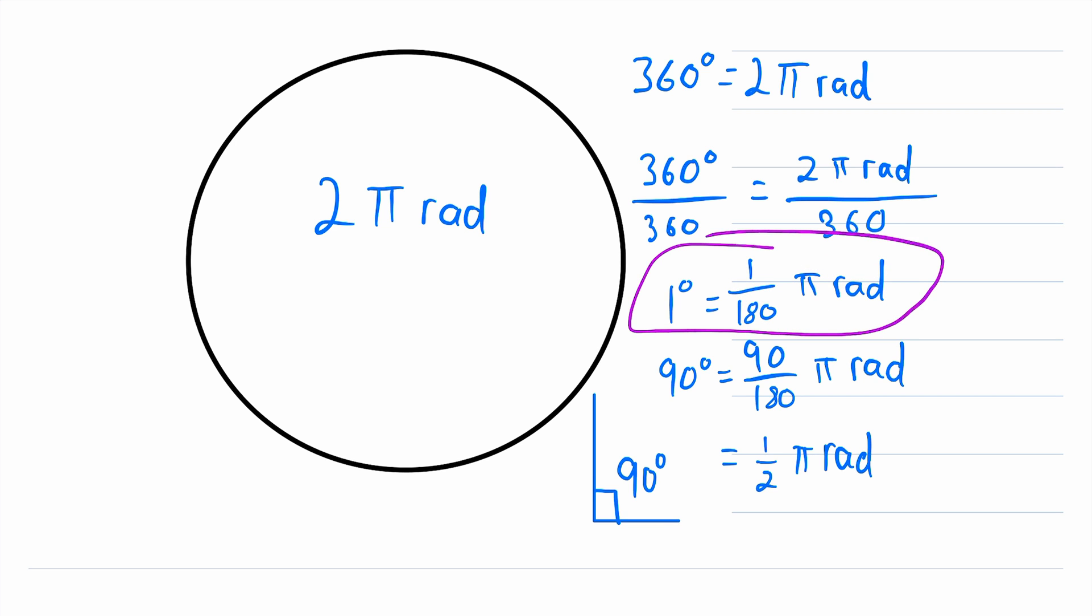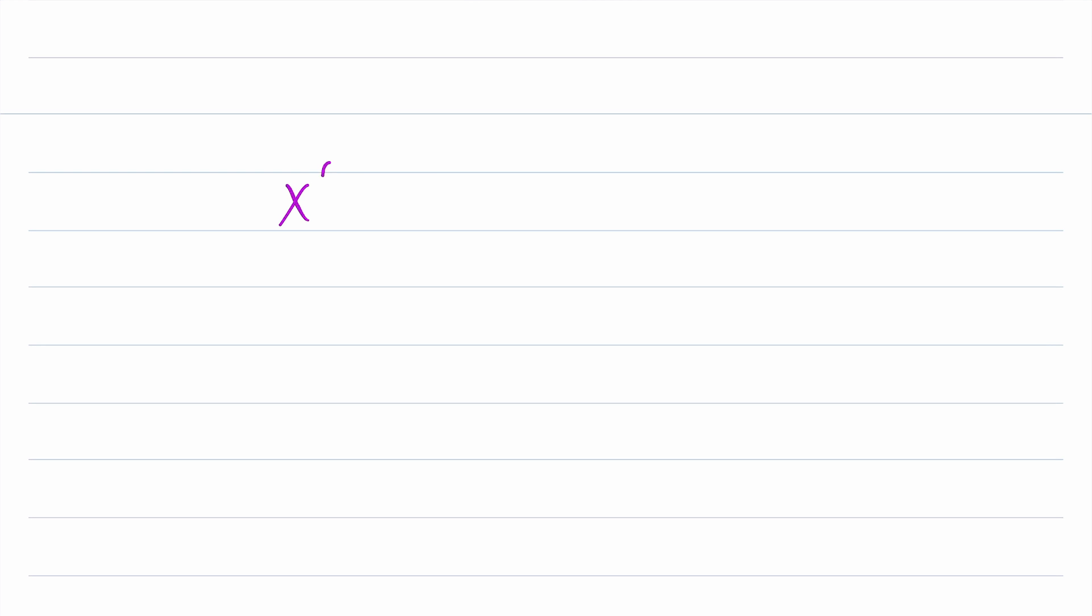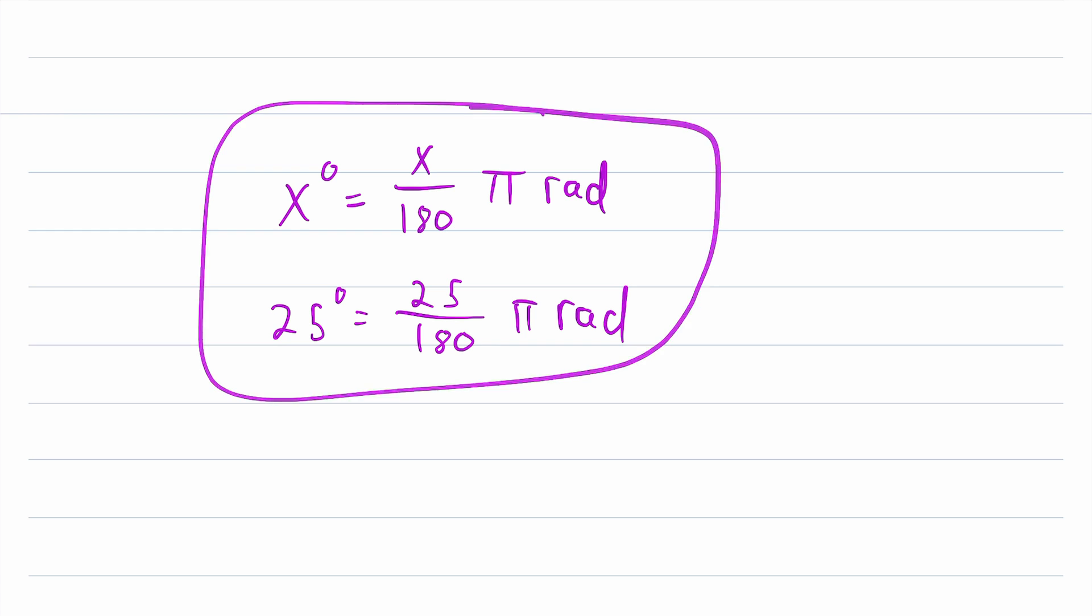And we could also write this formula another way that might be more clear to some of you, we could write it as x degrees is equal to x over 180 pi radians. So for example, 25 degrees, that's just equal to 25 over 180 pi radians. And of course, you could do some simplification here, but we will leave it at that.